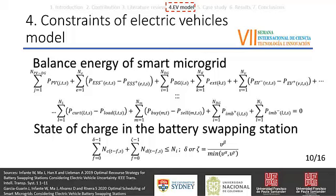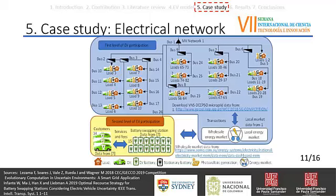The two main restrictions of the model are energy balance among stakeholders and battery swapping stations. The energy balance restricts that the energy bought and sold is equal for each period. The second restriction represents the state of charge of electric vehicle batteries. This equation represents the charging restrictions due to vehicles and charger technology. Also, the remaining hours for battery chargers can be calculated from the state of charge.